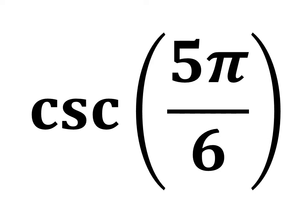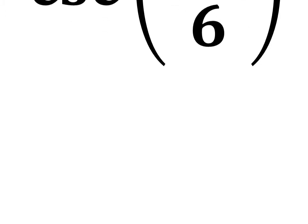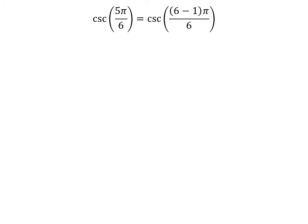In this video, we will learn to find the value of cosecant of 5 times pi upon 6. Two methods have been explained. Let us look into the first method to find the value of cosecant of 5 times pi upon 6.